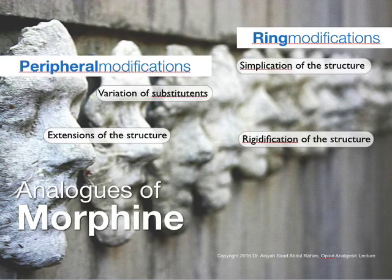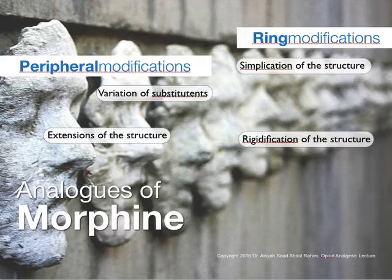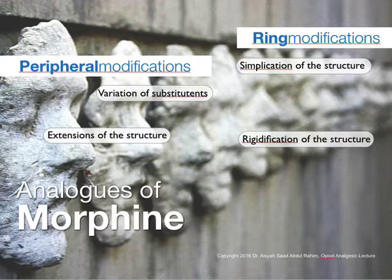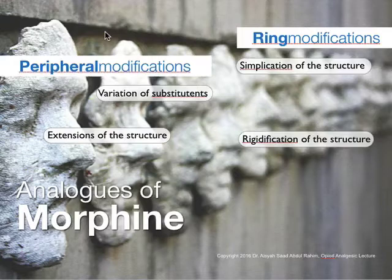Assalamu'alaikum and hi guys. I'd like to answer some questions regarding the optimization of morphine. So if you see from the slide here, it's going to be a very brief video on the modifications of morphine and its derivatives. There are two types of modifications: the first one would be the peripheral modifications, and the second one is on the rings — the morphine rings.